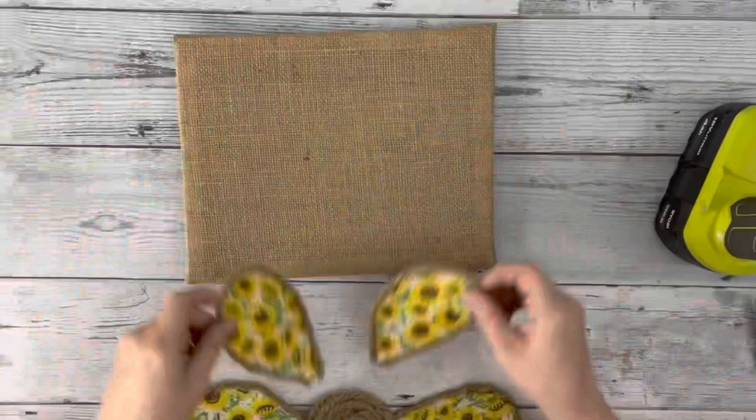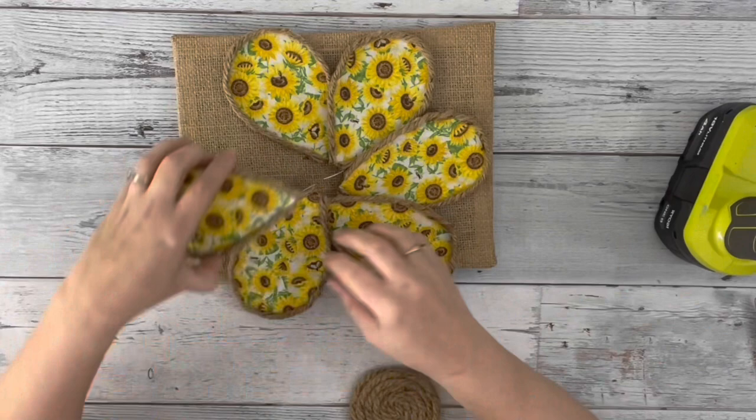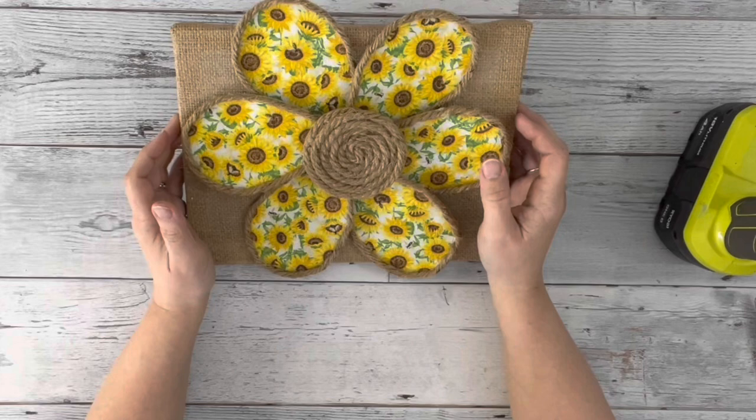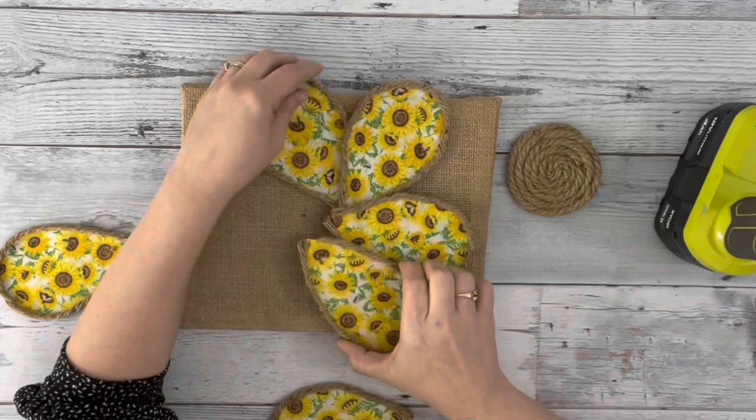And then I take my petals and place them on the burlap canvas, which is a new item at Dollar Tree. And then I place my little rope circle in the center. I'm just moving them around, getting them how I want them.